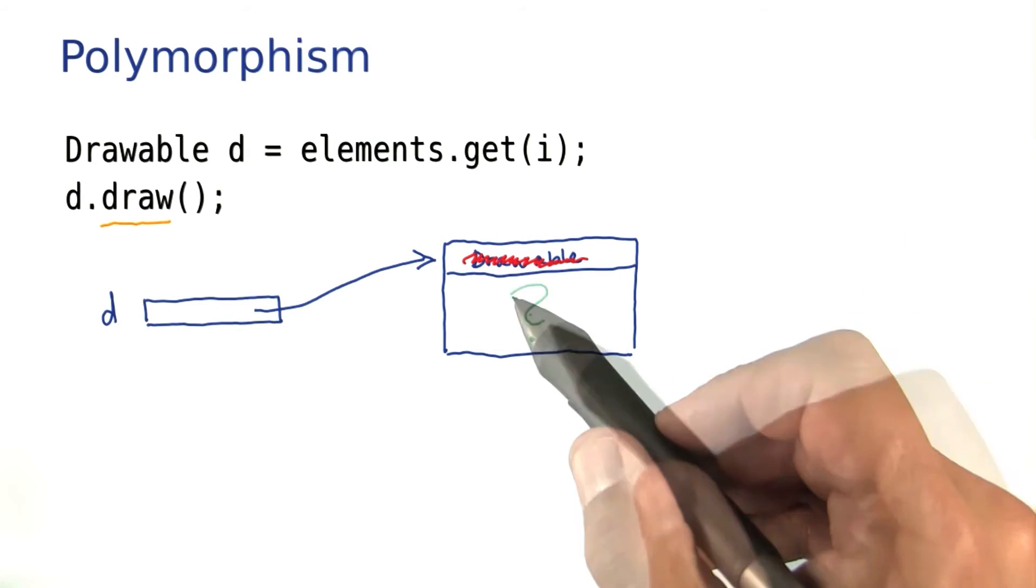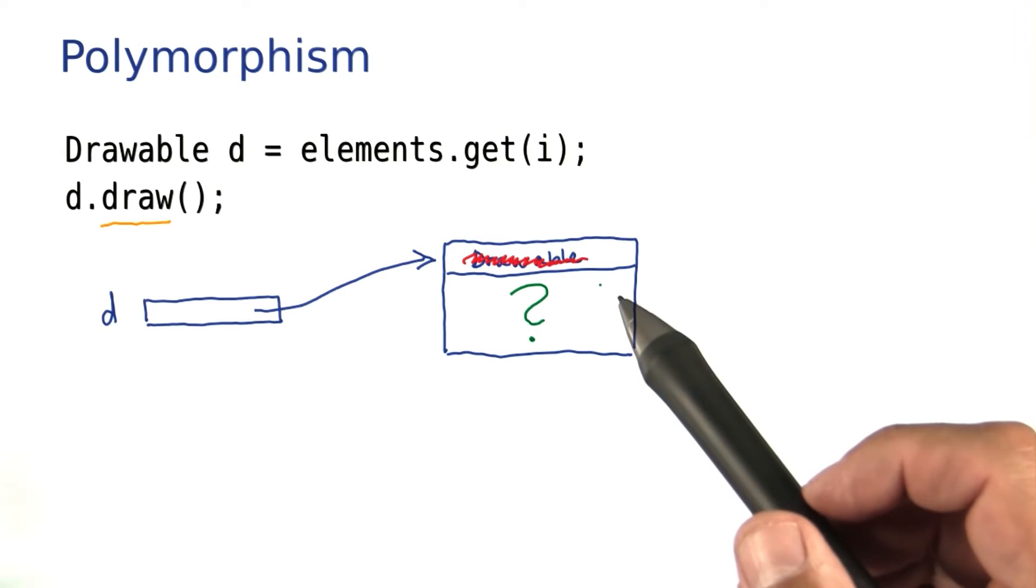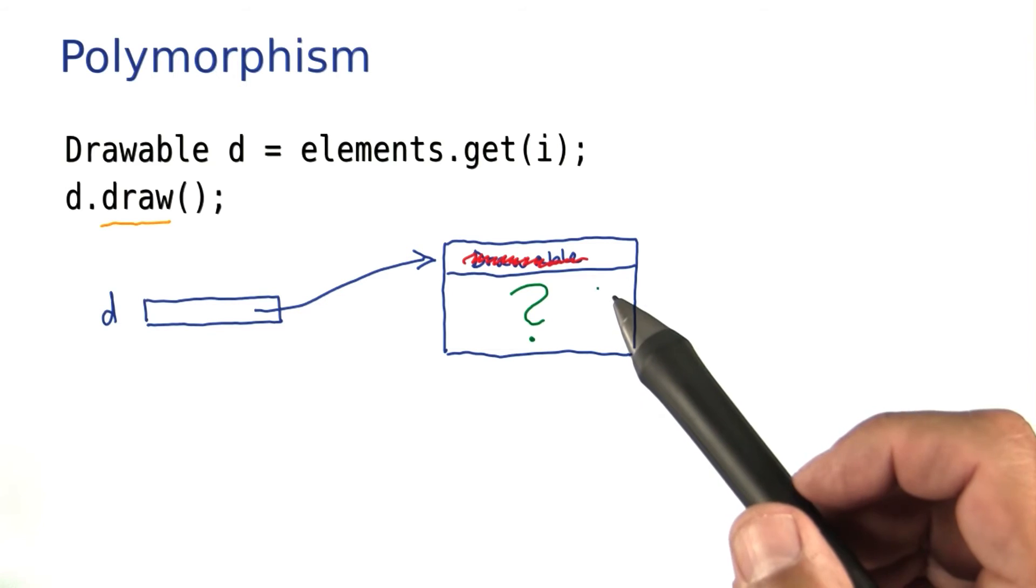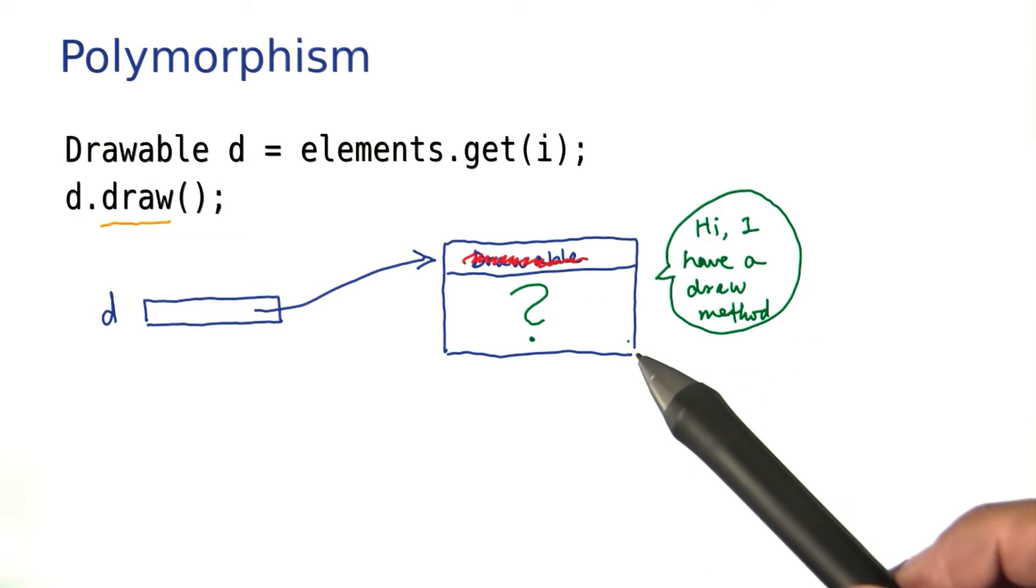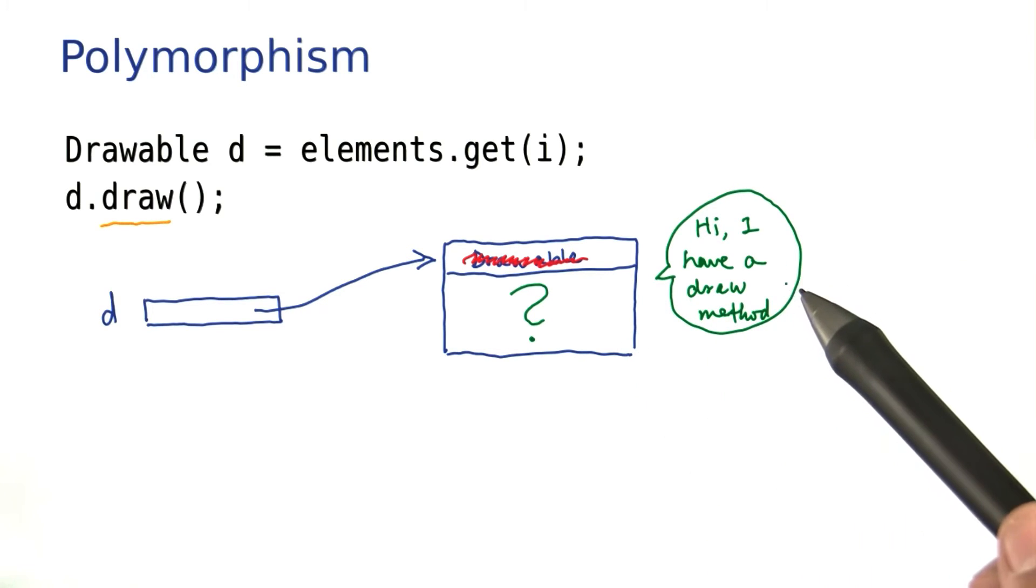In fact, there's no way of knowing to which class this object belongs. There's only one thing we know about it: this object belongs to some class that has a draw method.